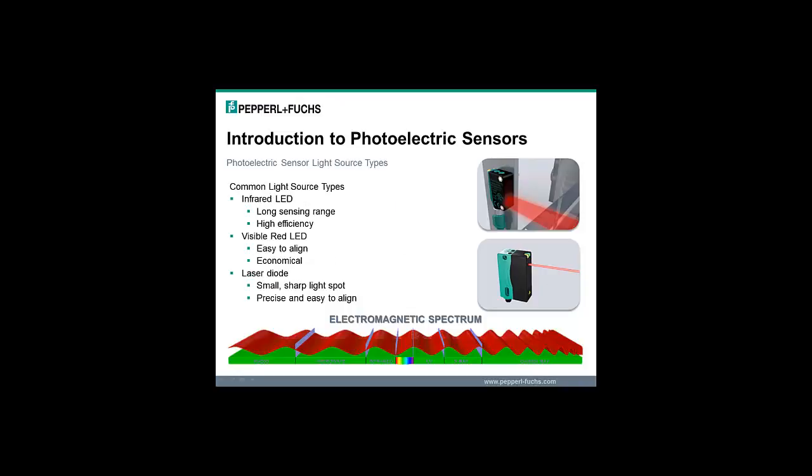The LEDs most commonly used in the construction of a photoelectric sensor operate in either the red portion or infrared portion of the electromagnetic spectrum. Infrared LEDs are the most efficient transmitters and can be driven by large current pulses. They have a high power output and are used to obtain longer sensing ranges compared to visible red LEDs. Visible red LEDs are the most common and most economical LEDs in use, due largely to being able to see the light spot with the naked eye, allowing the user to easily align the light beam to the object to be detected.